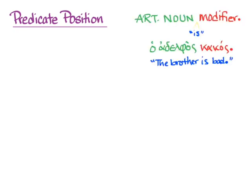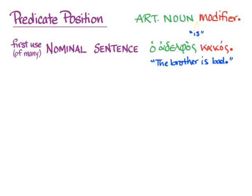We talked about this in section 16. You have an article and a noun in the nominative and a modifier in the nominative that agrees with it, and you supply a verb — 'is' or 'are' — and what you have is called a nominal sentence. We will have other uses of predicate position where some adjectives are specialized words that mean specific things, but the most common use of predicate position is where you have something in the nominative with an article and something else in the nominative that agrees with it, and you supply 'is' or 'are' as a linking verb to make it into a whole sentence.